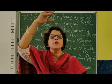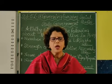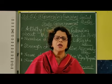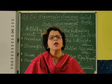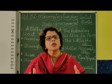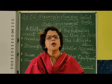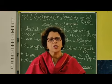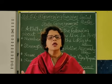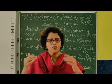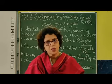Above the central government, we have the president of our country, who is the head of the state. The leader of the political party which gets the majority in the central government is chosen as the prime minister of the country. The leader of the political party that has got a two-thirds majority in each state forms the government, and that leader becomes the chief minister of the state.